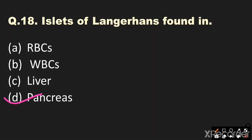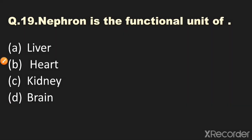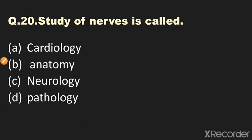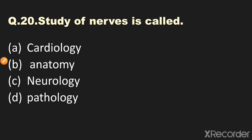Question number nineteen: Nephron is the functional unit of? Options: A) liver, B) heart, C) kidney, D) brain. The answer is kidney — nephron is the functional unit of the kidney. Question number twenty: The study of nerves is called? Options: A) cardiology, B) anatomy, C) neurology, D) pathology. The answer is option C, neurology — the study of nerves is called neurology. Thanks for watching the video.